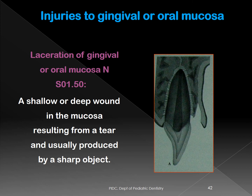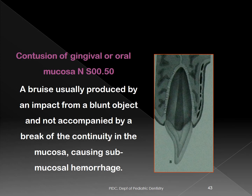The fourth category is injuries to the gingiva and soft oral mucosa. A laceration of the gingiva or mucosa involves tearing of the epithelium from its submucosa. Contusion of the gingiva results from blunt impact, causing bruising — internal capillaries tear and leak blood into the mucosa, appearing as bluish discoloration.